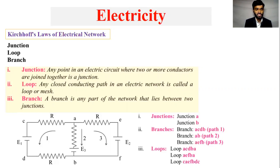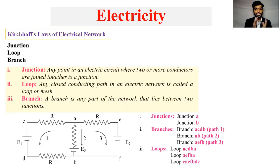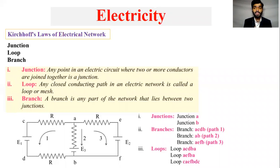Where are the junctions? Any points in an electrical circuit where two or more conductors are joined together is a junction. How do we understand the junction? We have two conductors.